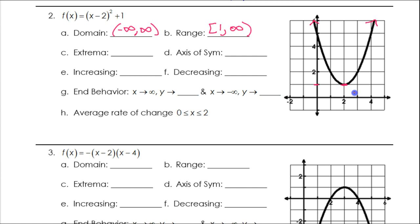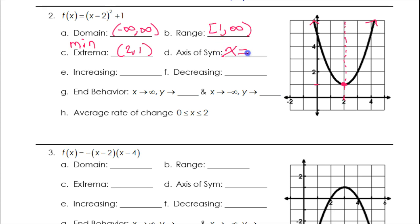The extrema — this vertex is one of the extrema. It is the minimum. Sometimes it's a maximum, like problem number 3, but this is a minimum, and it's at the point (2, 1). The axis of symmetry is a vertical line right down the middle, so the axis of a vertical line is always going to have the equation x equals something. In this case, that's x equals 2.